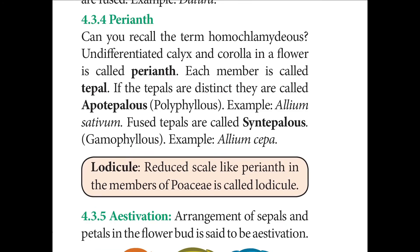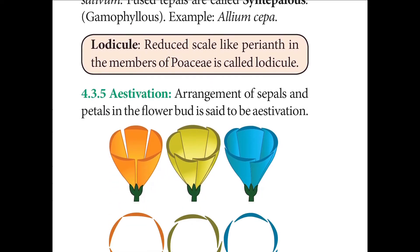Apopetalous perianth is present in Allium sativum (garlic), and syntepalous is seen in Allium cepa (onion). Lodicules are reduced scale-like perianth members seen in the family Poaceae — for example, rice.